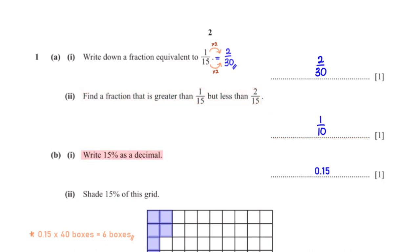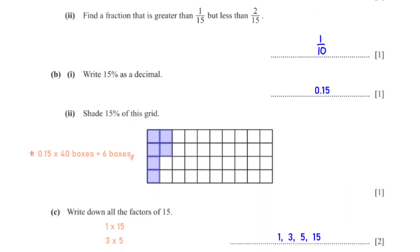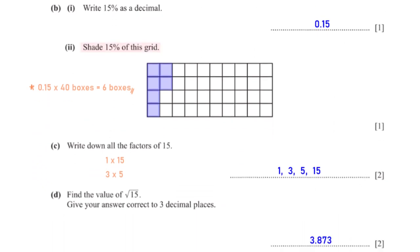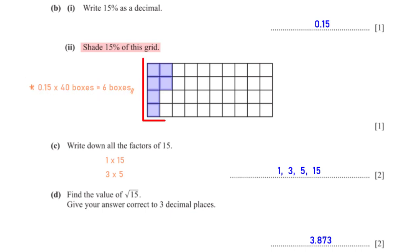Write 15% as a decimal. When we type 15% into the calculator, we get its decimal form to be 0.15. Shade 15% of this grid. The grid is made up of 40 boxes. 15% of 40 is 6, so we shade 6 boxes.